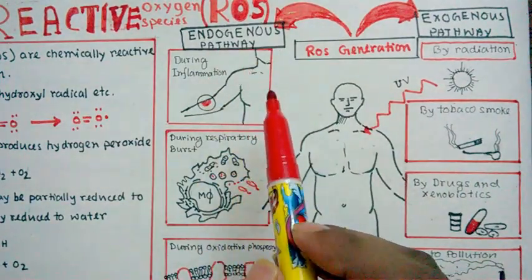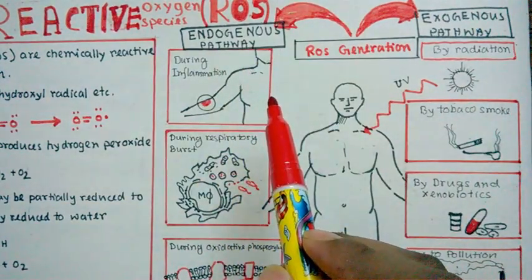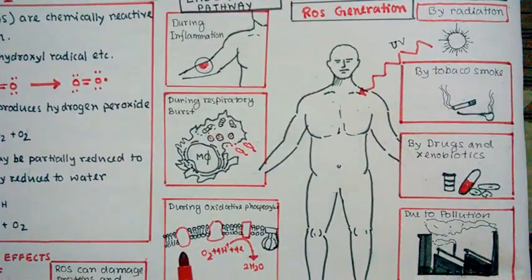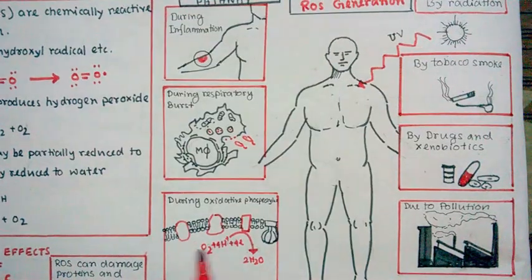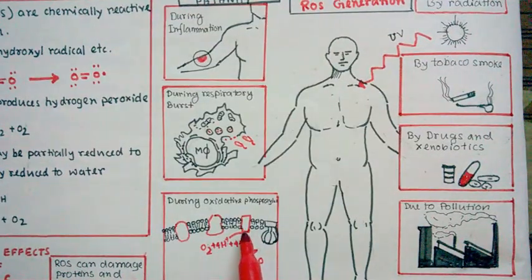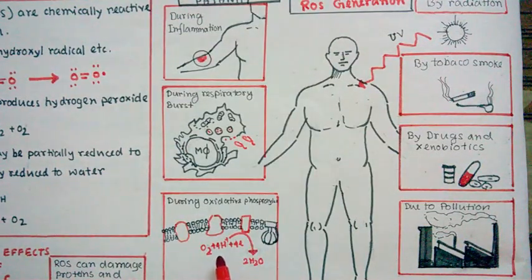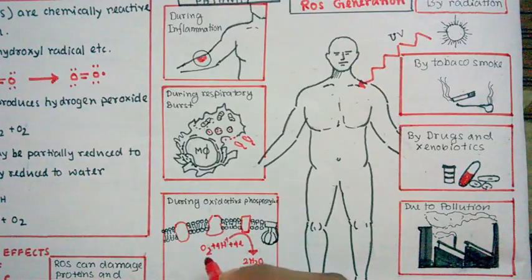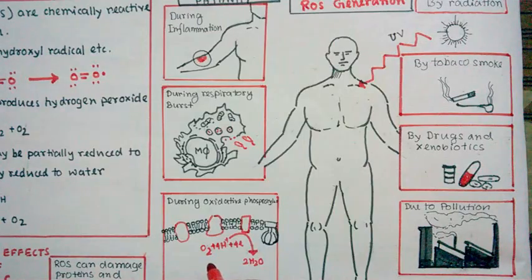ROS is generated normally in our body during oxidative phosphorylation. In complex four, the terminal electron acceptor is oxygen. Oxygen accepts four electrons and forms two molecules of water. Now instead of accepting four electrons, if oxygen molecule accepts one electron, then it would convert into a superoxide radical.